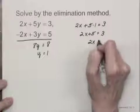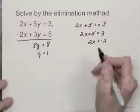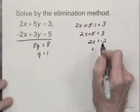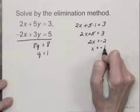If I subtract 5 on both sides, I have 2x equals negative 2, and dividing on both sides by 2, I have x equals negative 1.